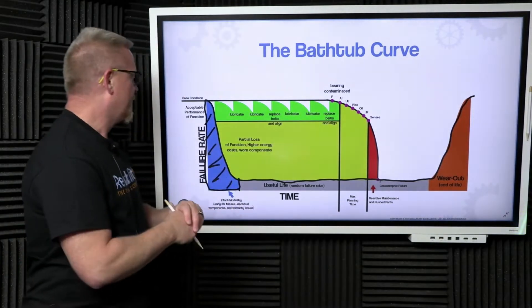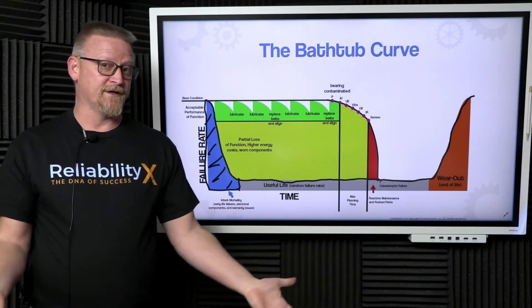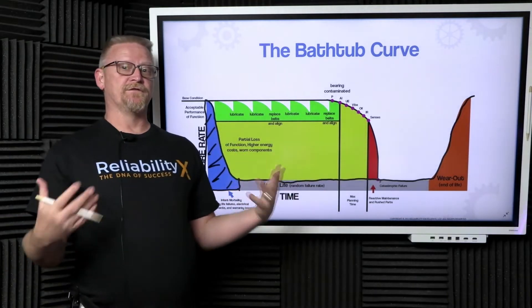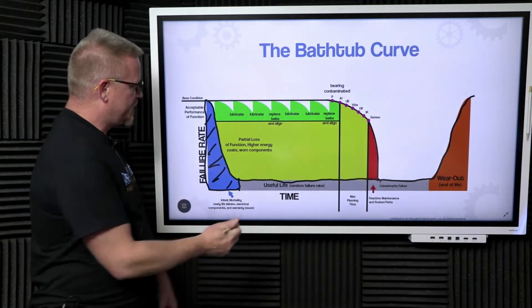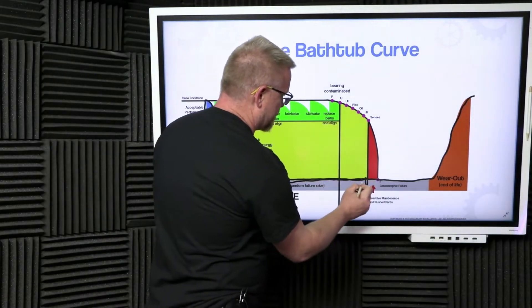This failure mode of infant mortality includes things like warranty items, things that are made on the Monday after Super Bowl, etc. If things survive that pattern, they go through what's called the typical useful life.